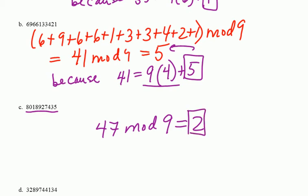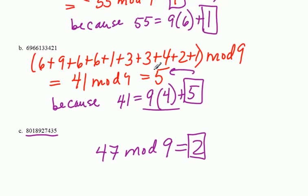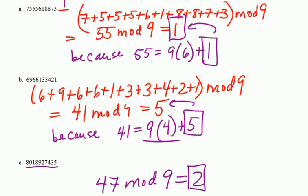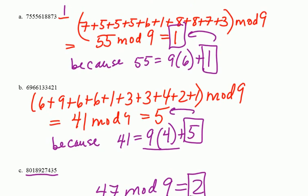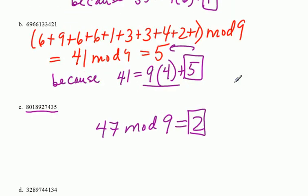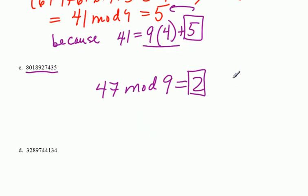And the reason for this, let's use a different color because I've completely gone against my color coding here. Let's use green because we can. Why is this? Because 47 is equal to 9 times 5 plus 2. Okay.